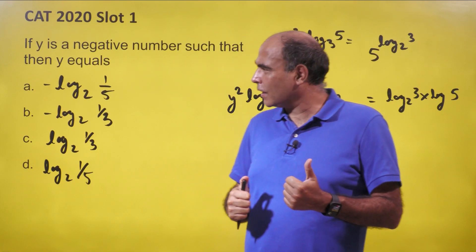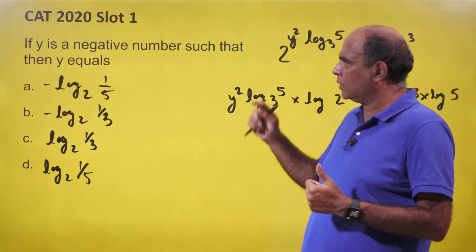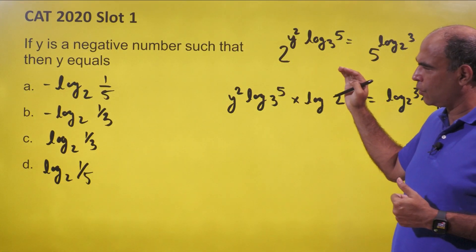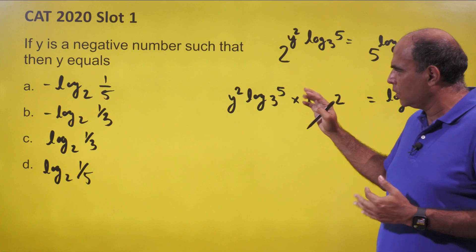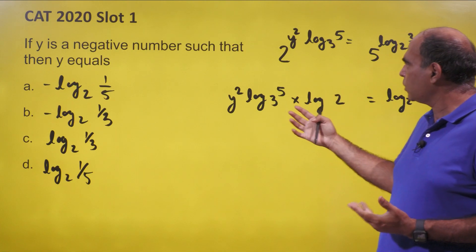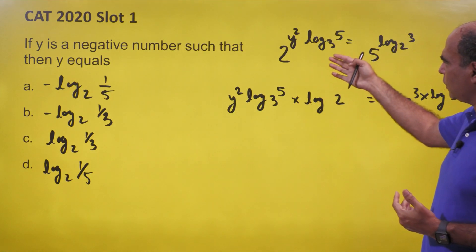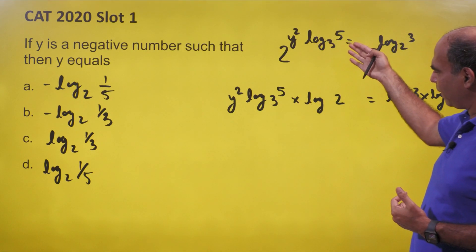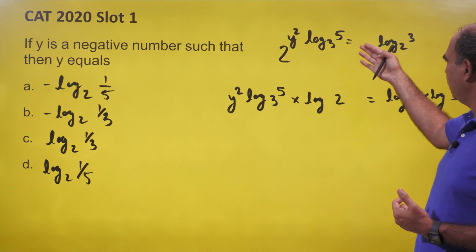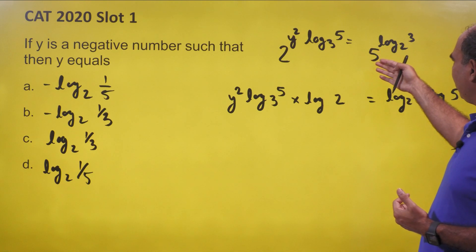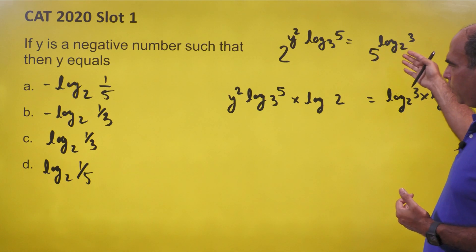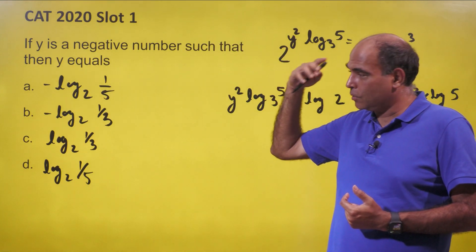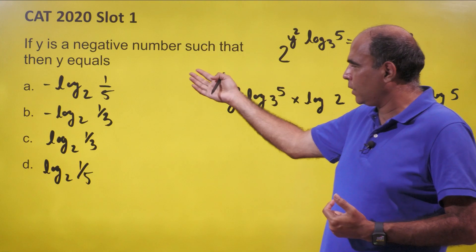Hey guys, welcome back to the 60-second solution series. CAT 2020 question on logarithms — pretty much a two-step question. The question says: 2 raised to y² × log 5 to the base 3 is equal to 5 raised to log 3 to the base 2. Then y equals, and y is a negative number.